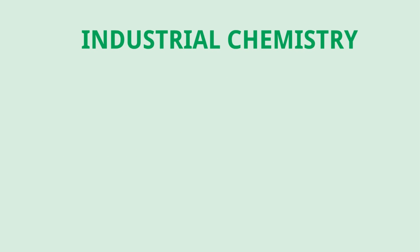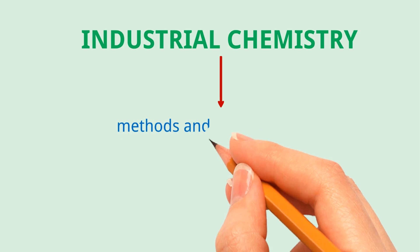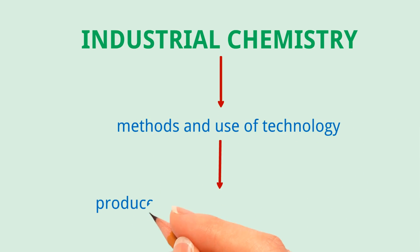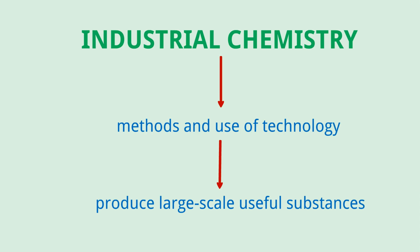Industrial chemistry. This branch of chemistry deals with the methods and use of technology to produce useful substances in large scale.